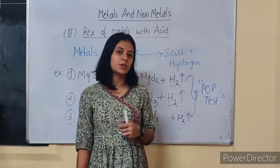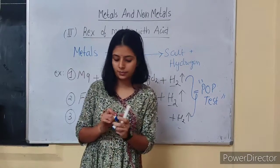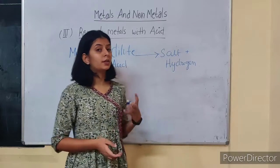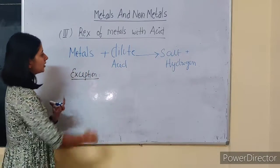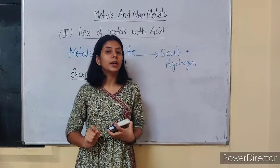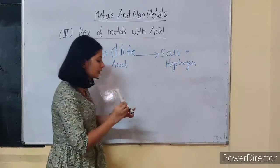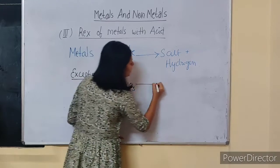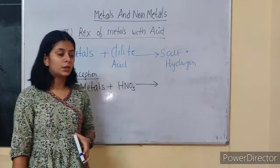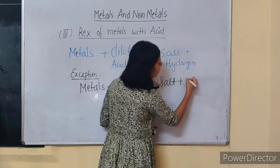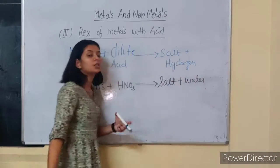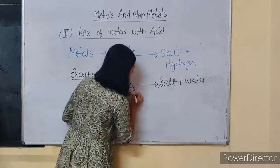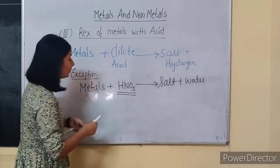Moving on to some exceptions. Under these types of chemical reactions we also have some exceptions. The exception is that when metals react with dilute nitric acid — HNO₃ — in that case salt and water will be produced. No hydrogen gas will be released in that situation.